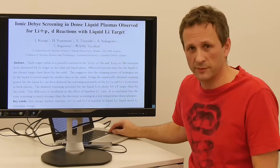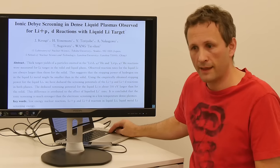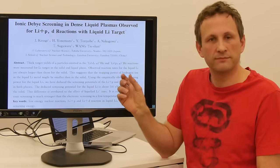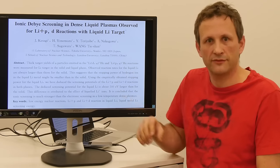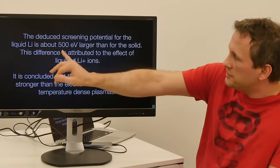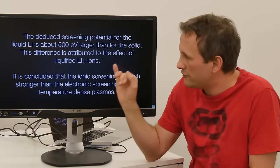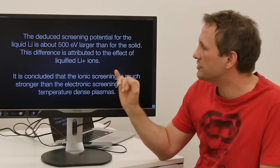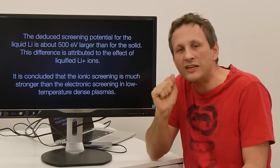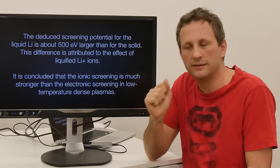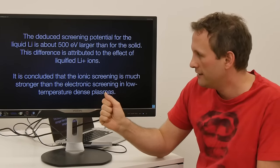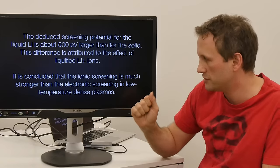I'll include links to these documents in the description of the video. And there'll also be this PowerPoint presentation as a PDF that you can download. It's saying, the deduced screening potential for the liquid lithium is about 500 eV larger than for the solid. The difference is attributable to the effect of liquefied Li+ ions. It is concluded that the ionic screening is much stronger than the electronic screening in low-temperature dense plasmas.